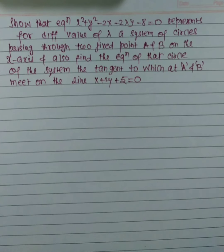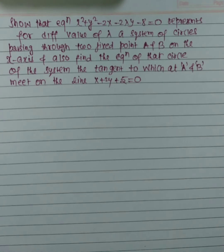Okay, so the next question is: the equation represents, for different values of lambda, a system of circles passing through two fixed points A and B on the x-axis.